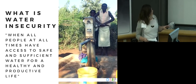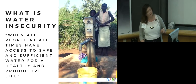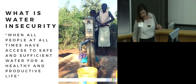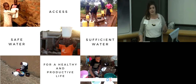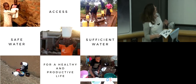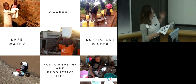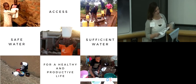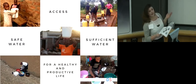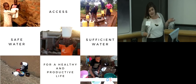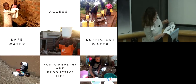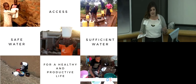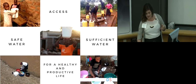Water insecurity then exists when one or all of these parts are missing. We know that water insecurity is part of a system predicated on three components: access — how and where you get your water; safety — can you safely fetch it and is it safe to drink; and sufficiency — is there enough of it for my daily needs, for my household's daily needs.